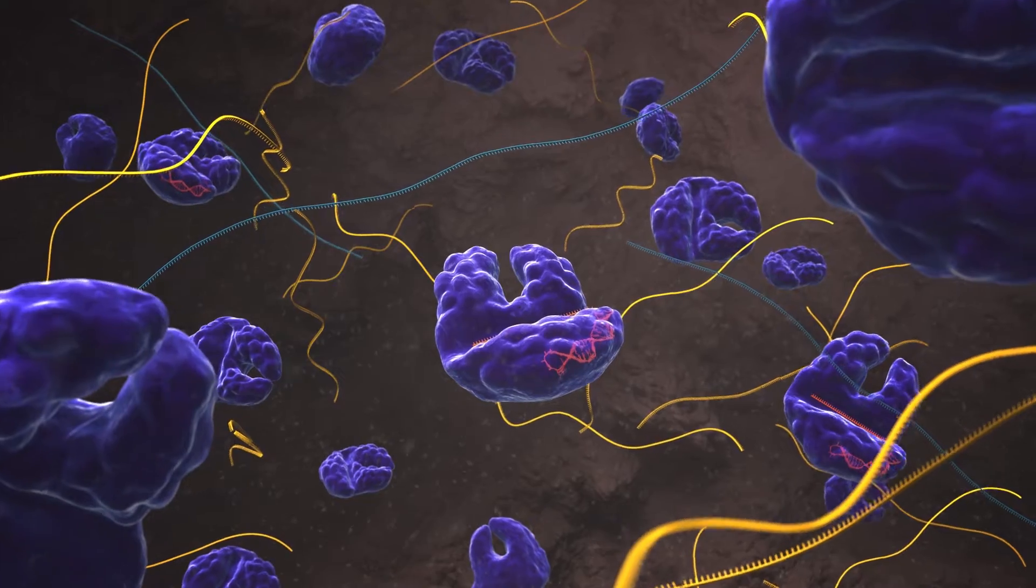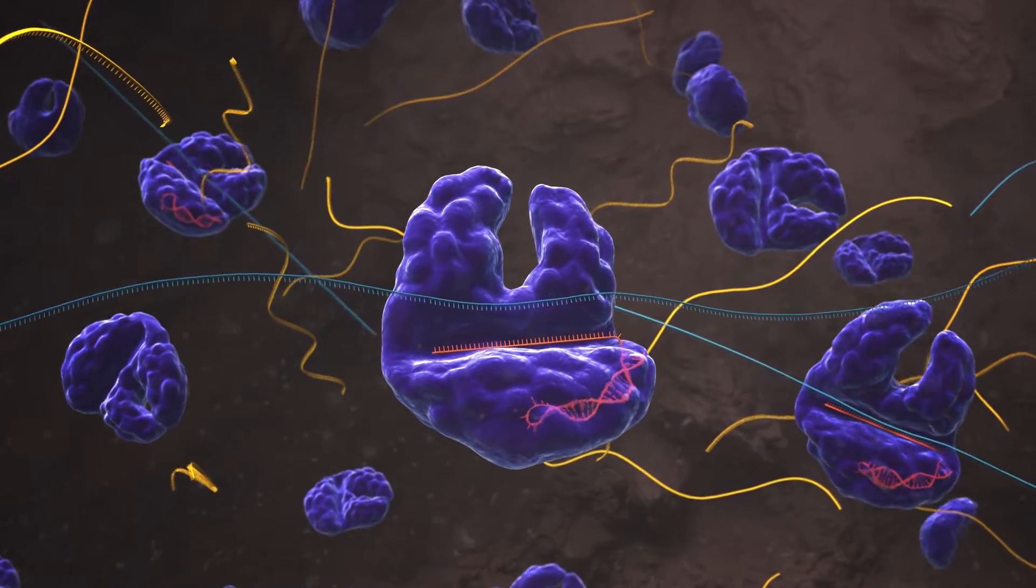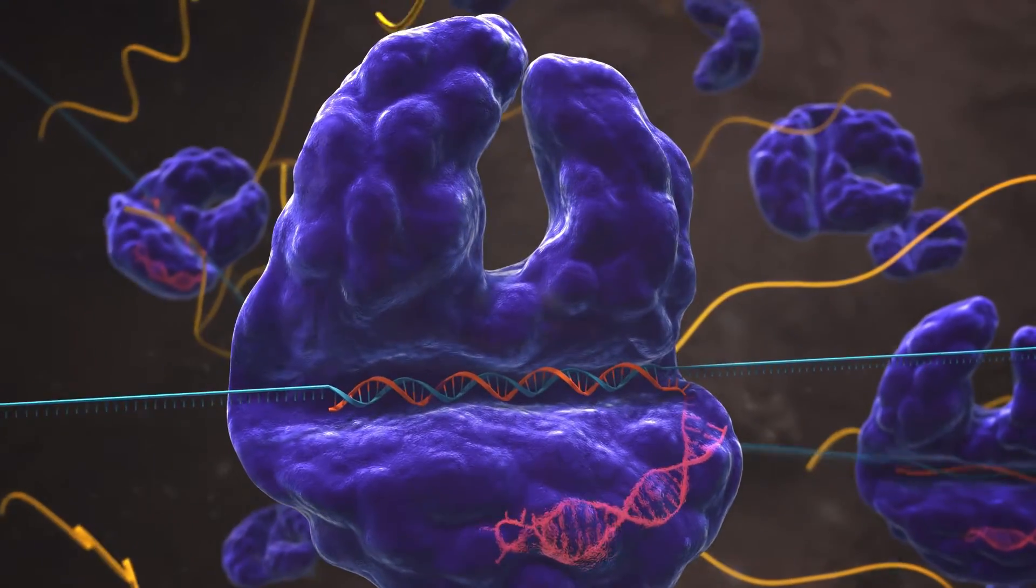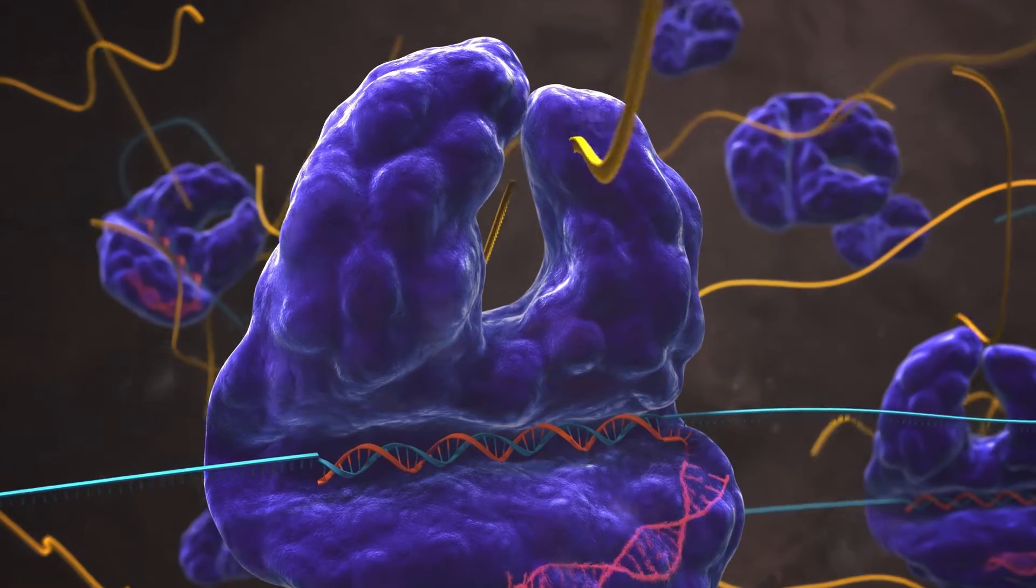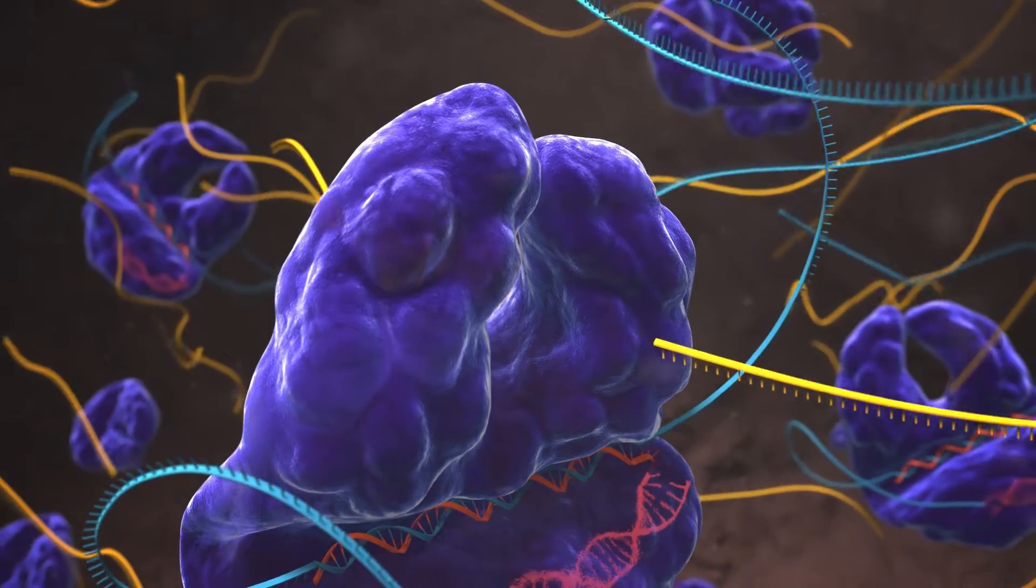Here's how Cas13 works in its natural environment. First, it hunts for viral RNA using an RNA guide. When it finds its viral target, Cas13 becomes activated. In some circumstances, it cuts any RNA it encounters, a process termed collateral cleavage.